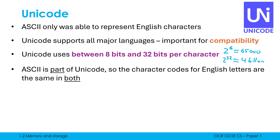The last important fact to know about Unicode is that ASCII is part of Unicode, so they are interchangeable. The character codes for English letters are the same in both ASCII and Unicode — so the code for capital A in ASCII is 65 in denary, and it will also be 65 in Unicode. Exam questions will occasionally test you on that fact by asking for the Unicode equivalent of an English character.